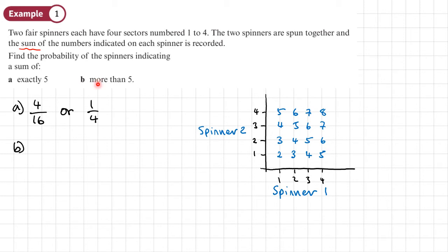Then part b: the probability that it's more than five. So more than five—one, two, three, four, five, six out of 16, which we could write instead, if we divide both of those by two, as three over eight.